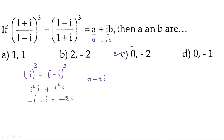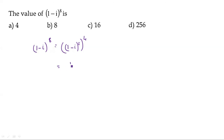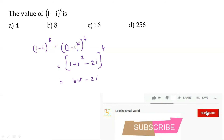Next problem: (1-i)^8. First simplify (1-i)². This equals 1 + i² - 2i = 1 + (-1) - 2i = 0 - 2i = -2i. So (1-i)^8 = ((1-i)²)^4 = (-2i)^4.